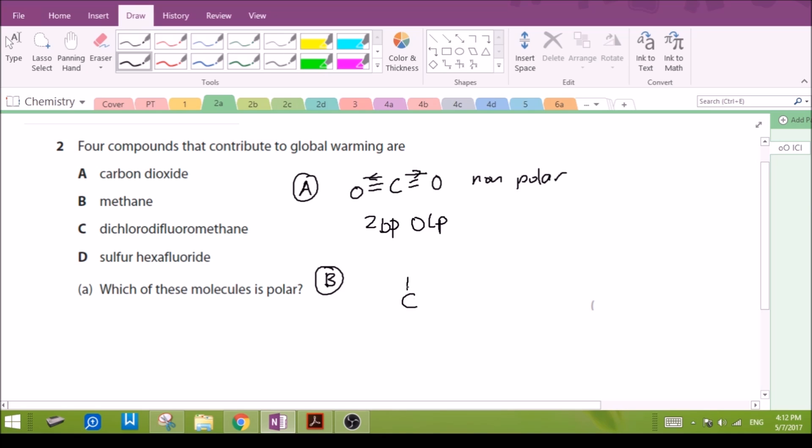For B methane, CH4, there's not much difference in electronegativity between carbon and hydrogen, so the bonds are not polar, so this is a non-polar molecule, it's tetrahedral in shape. For C, dichlorodifluoro, so two chlorines and two fluorines. Now the electronegativity difference between carbon and the halides, there is a significant difference so the bonds are actually polar.